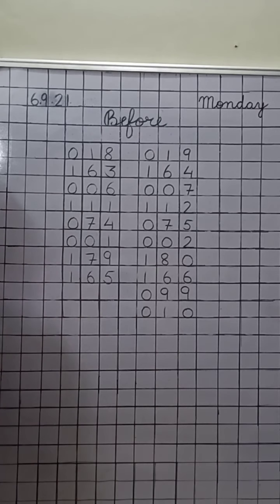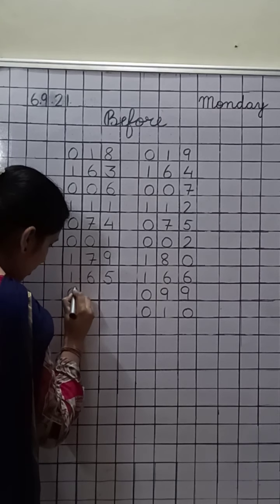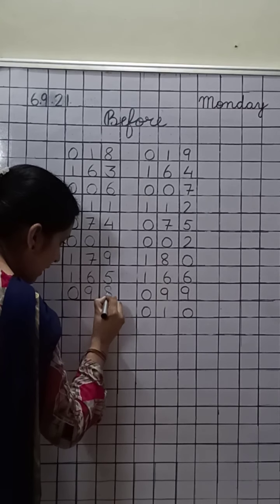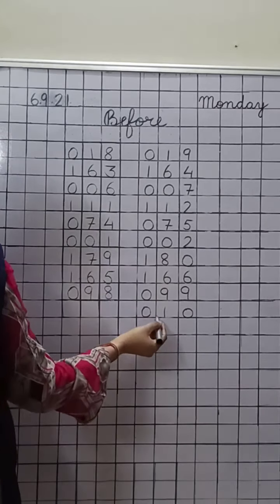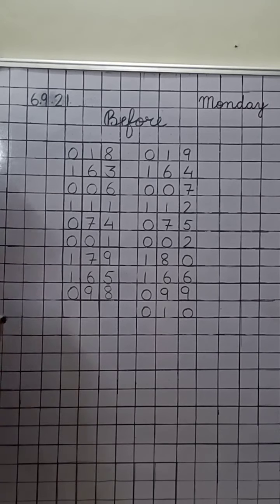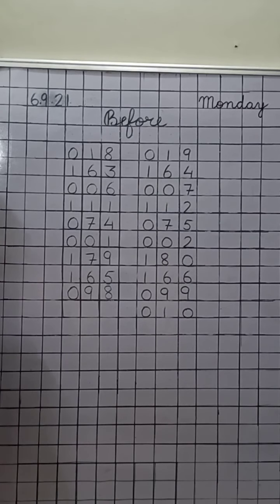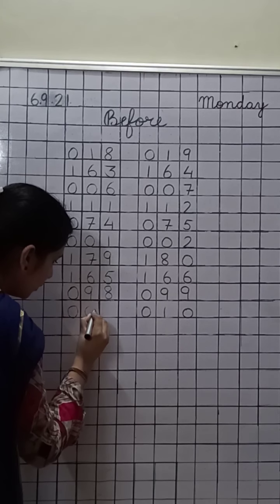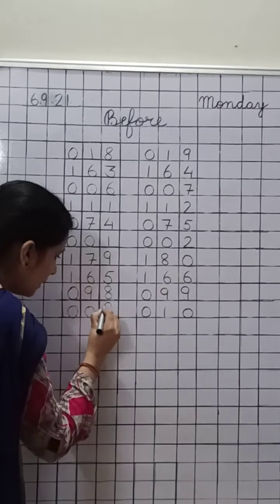Before ninety nine — ninety eight. Yes, write down ninety eight. Before ten — what comes before ten? Only nine. Write down nine.